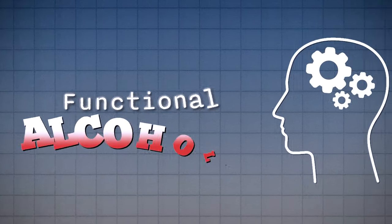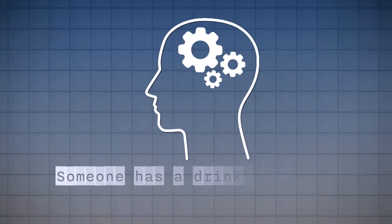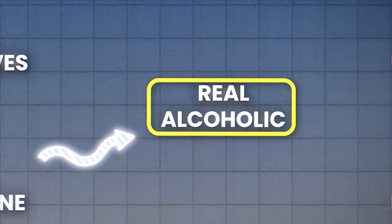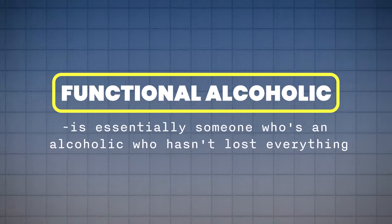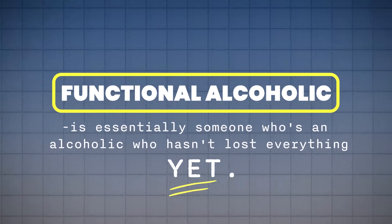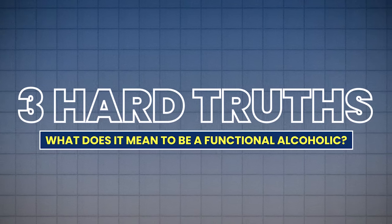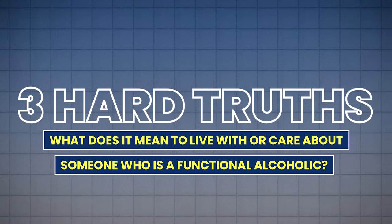A lot of people use the term 'functional alcoholic' to sort of downplay a label — it means someone has a drinking problem, but they don't really consider themselves, or their loved one, a real alcoholic. Unfortunately, that's not really the whole truth, because a functional alcoholic is essentially someone who's an alcoholic who hasn't lost everything yet. Keyword: yet. In this video I'm going to tell you three hard truths about what it means to be a functional alcoholic, or what it means to live with or care about someone who is one.